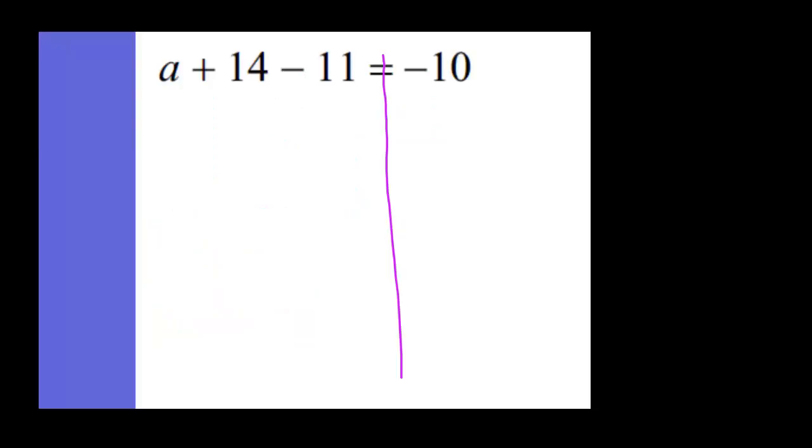On the left side of this equation, we can combine the positive 14 and the negative 11 since those are constants. There's no other a here, so just write a. 14 minus 11 is going to be positive 3.